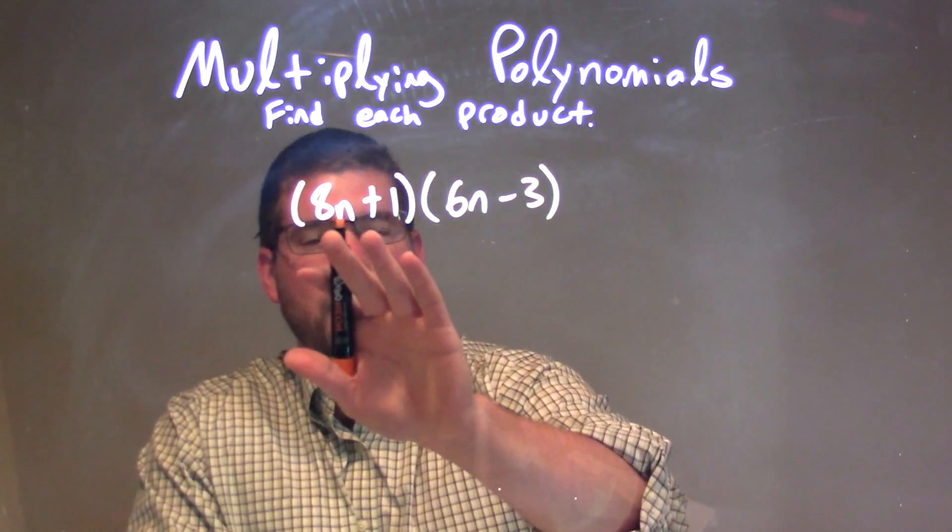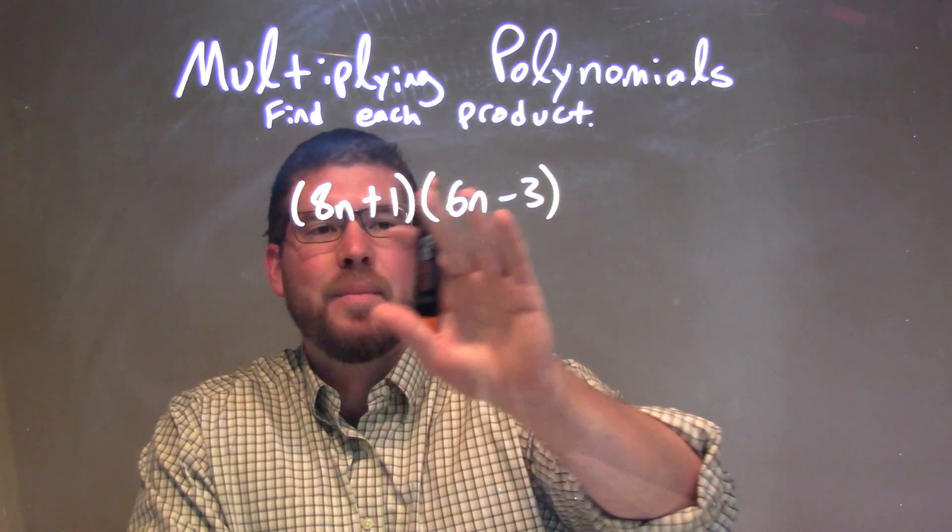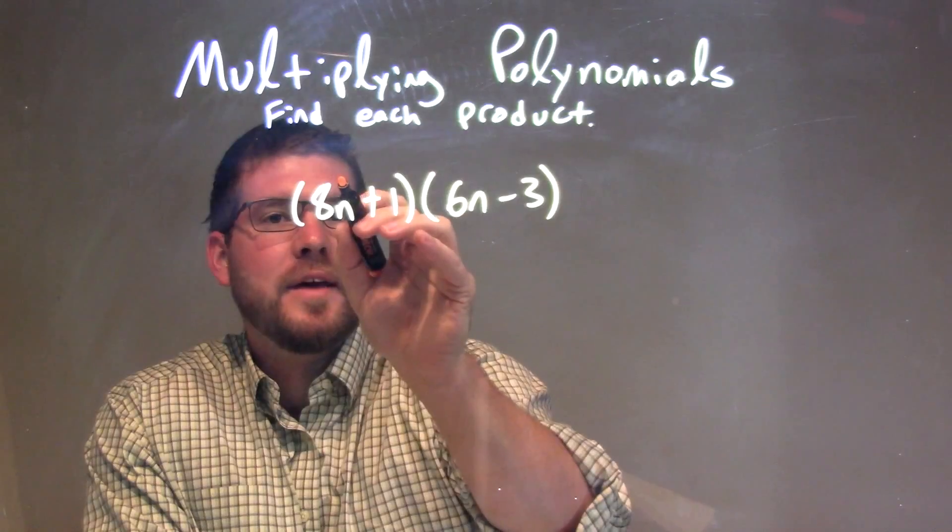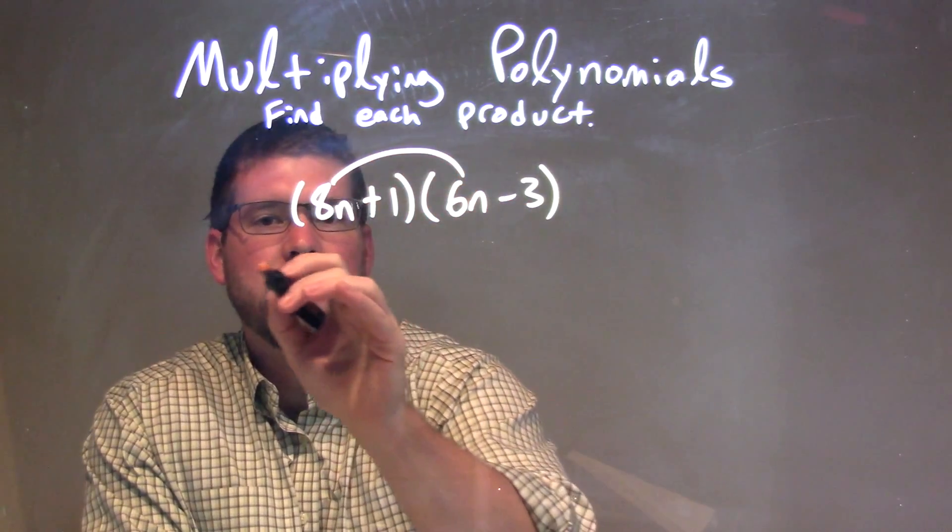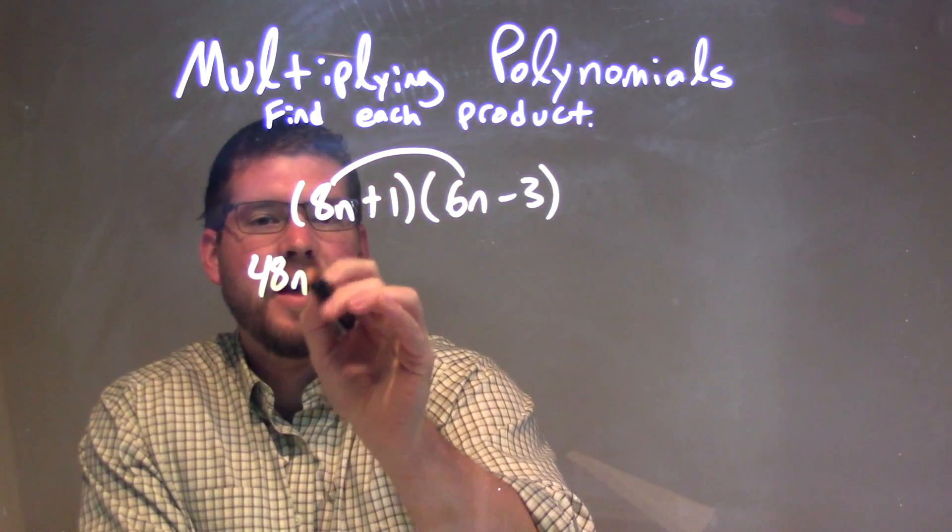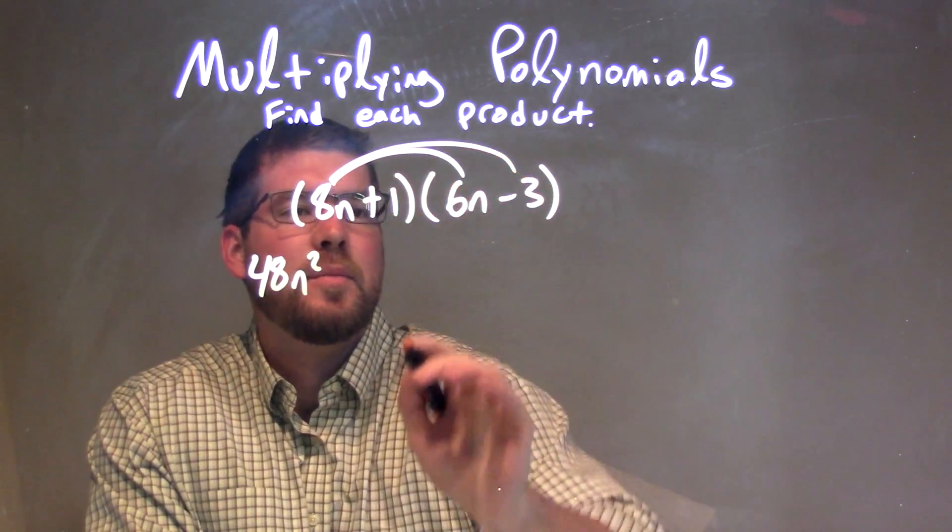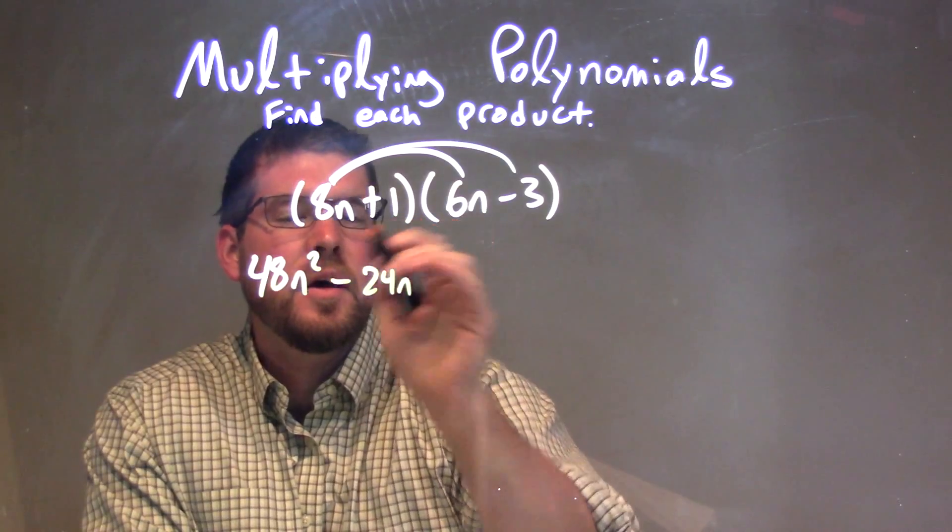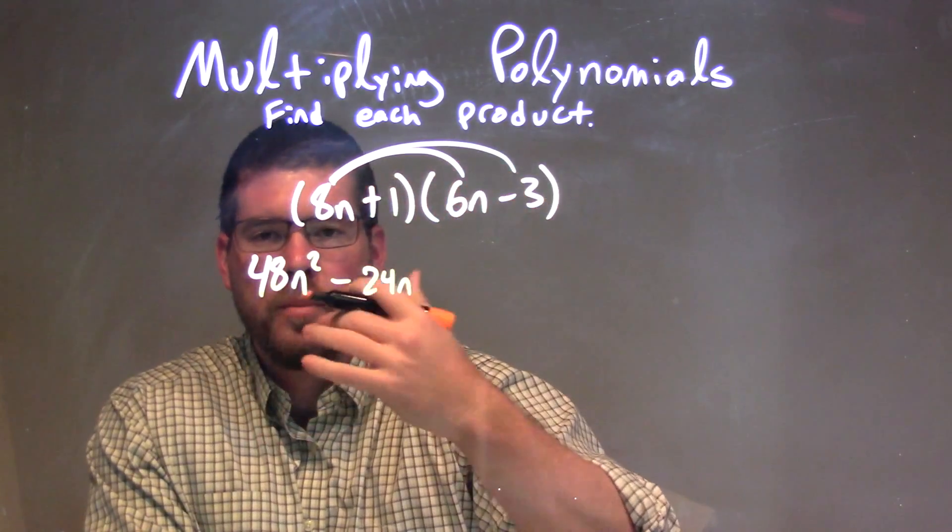We're going to take all parts of my first parentheses and multiply by all parts of our second parentheses. So first, 8n times 6n, which is 48n². Then 8n times -3 is -24n. Now we're drawing our arcs here to make sure we have all parts.